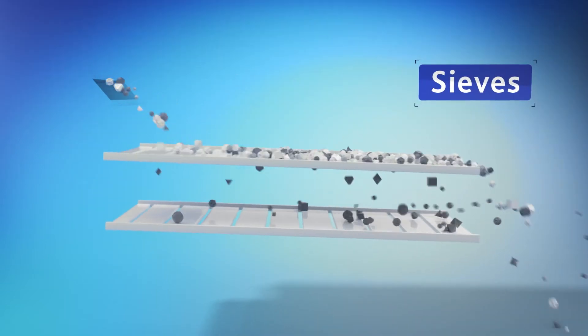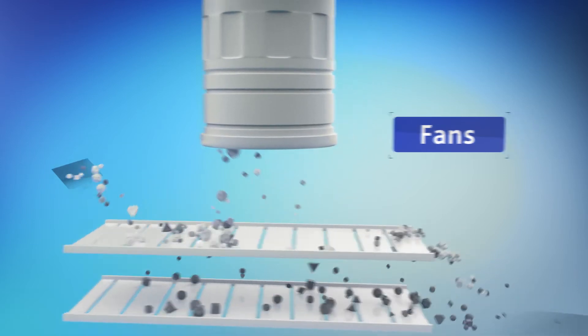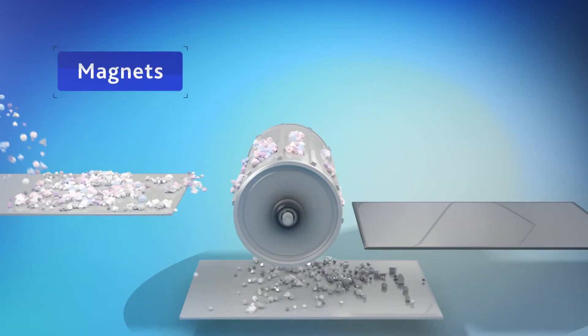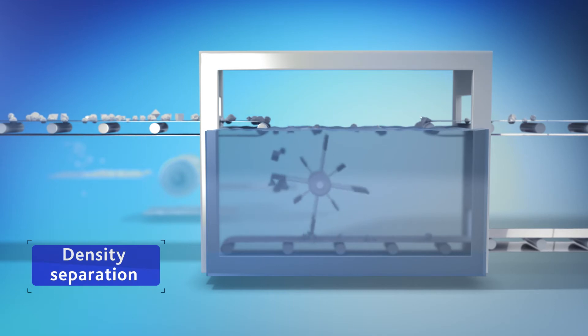Using large sieves, fans, magnets and water baths, light and heavy fractions are separated and plastics are separated from metals.